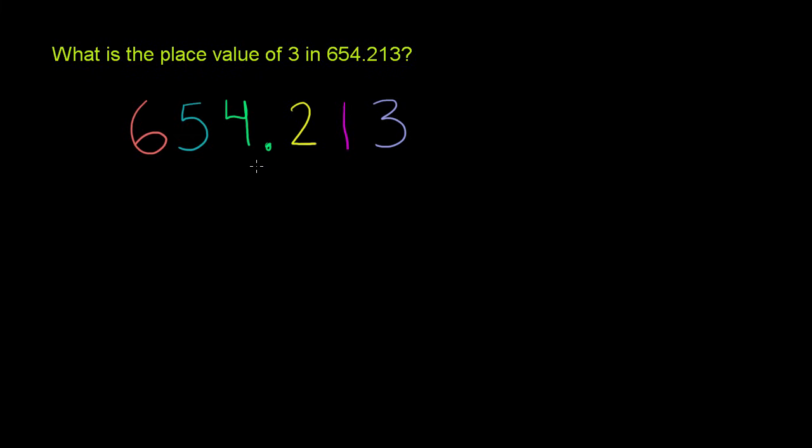Now we're pretty familiar with what goes on to the left of the decimal point. We know that this right here is the hundreds place, or we could view that as 10 to the second, which is the same thing as 100. This right here is the tens place, which is the same thing as 10 to the first. This right here is the ones place, which is the same thing as 10 to the zero.